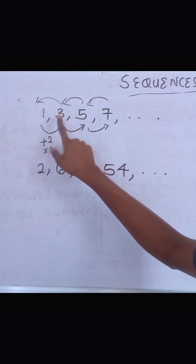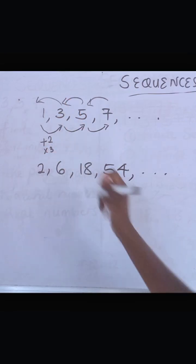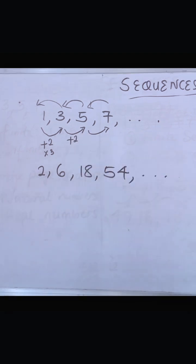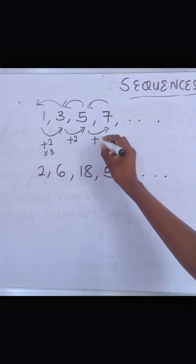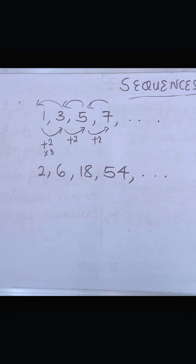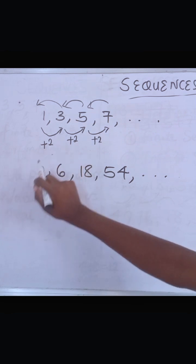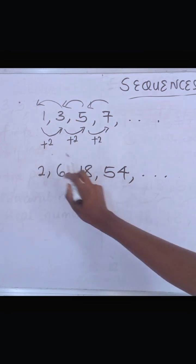We want to move like this, so what can we do to three to get five? We can add two to three to get five. What can we do to five to get seven? We can add two to five to get seven.